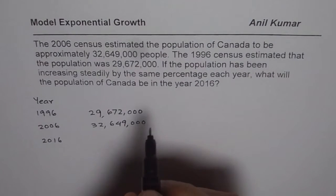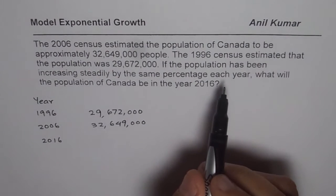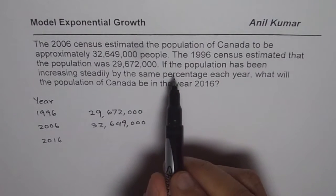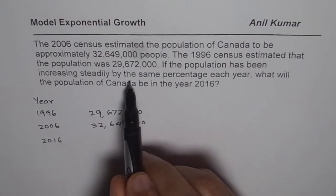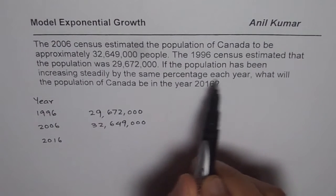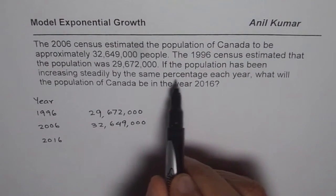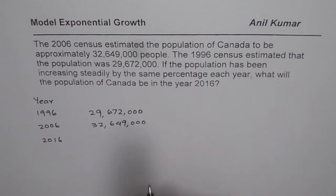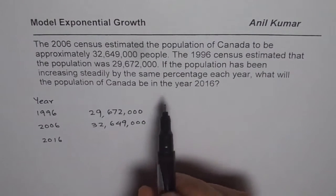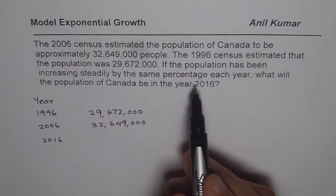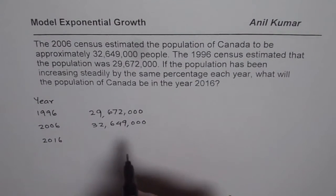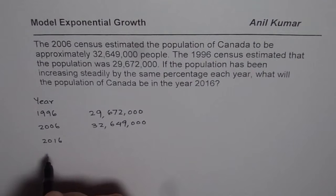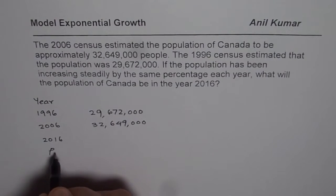We have also been given that the population has been increasing steadily by the same percentage each year. Same percent each year is like compounding every year — that is exponential growth. So we can now utilize the exponential growth formula: population at any time P(t),